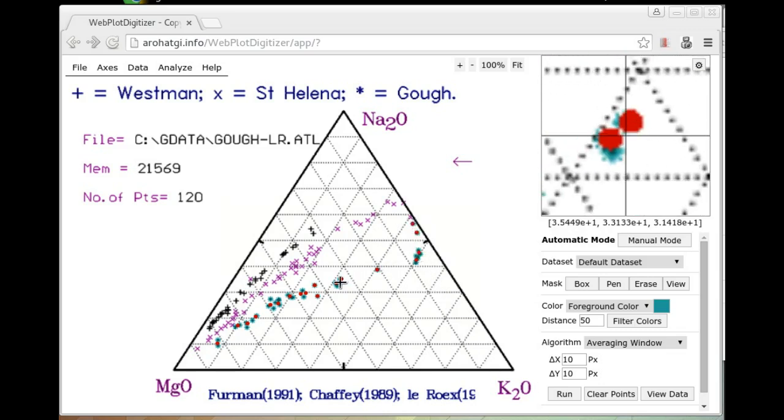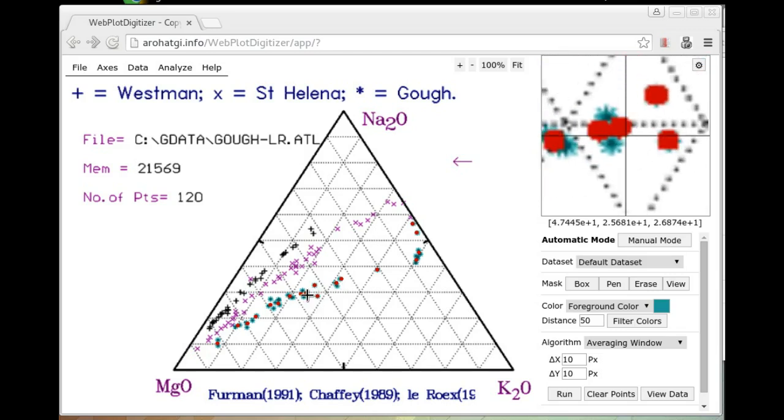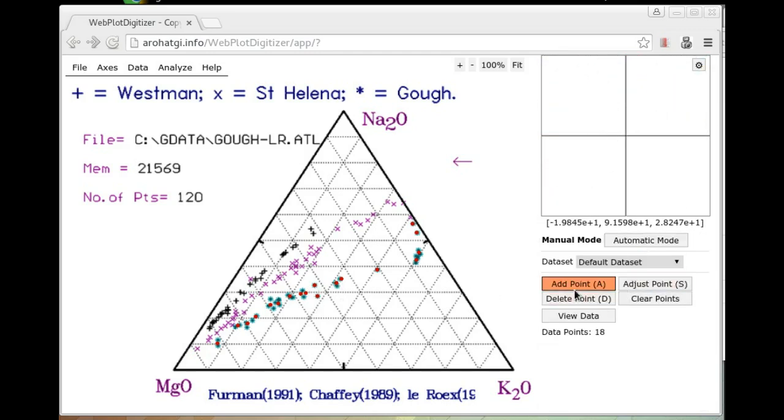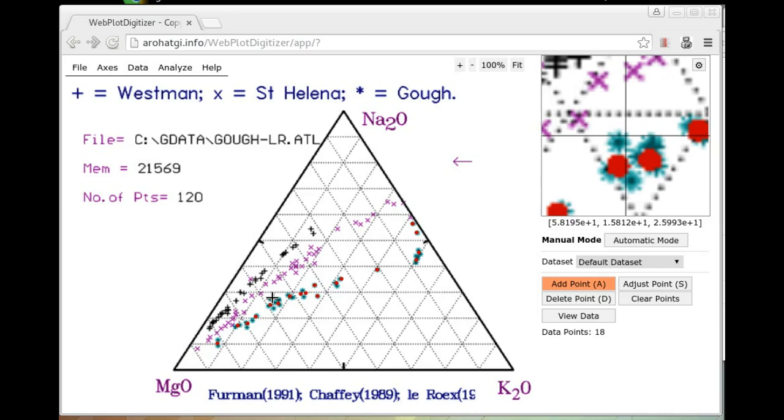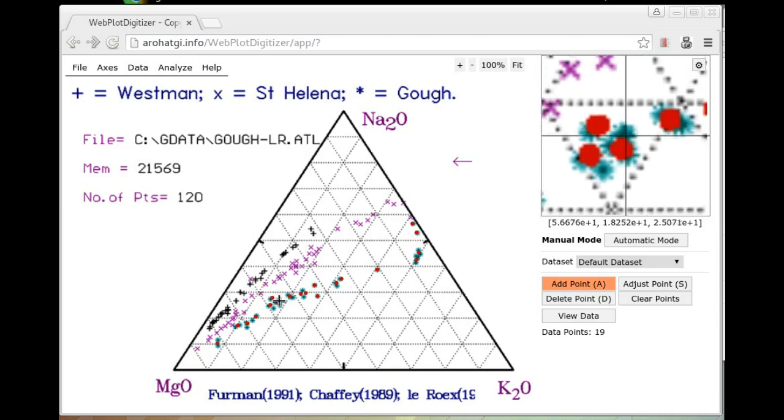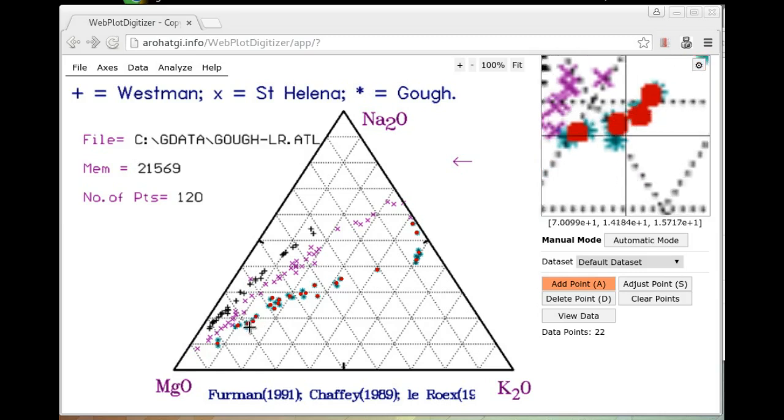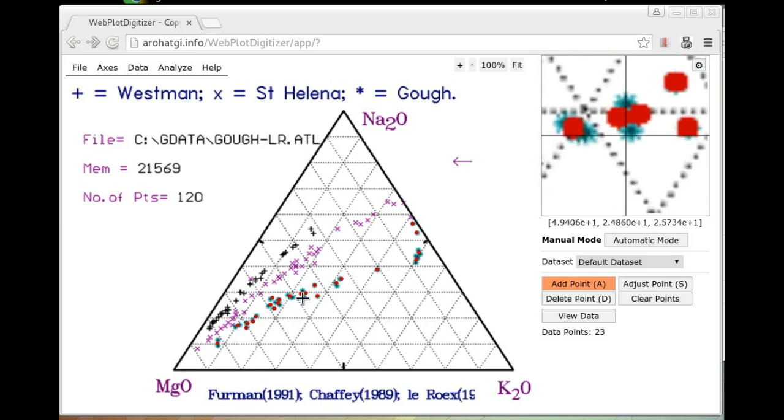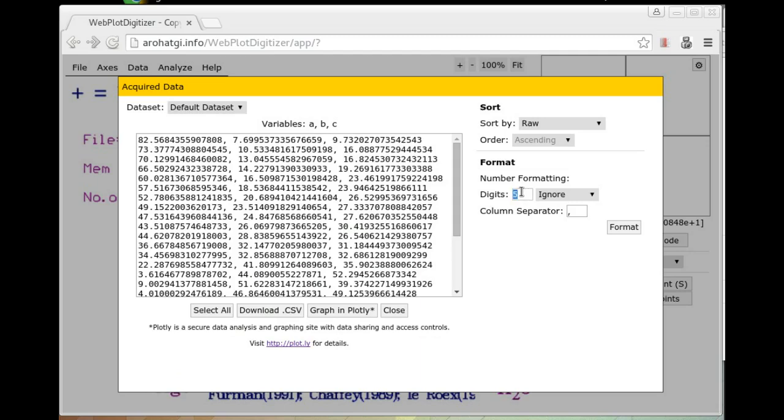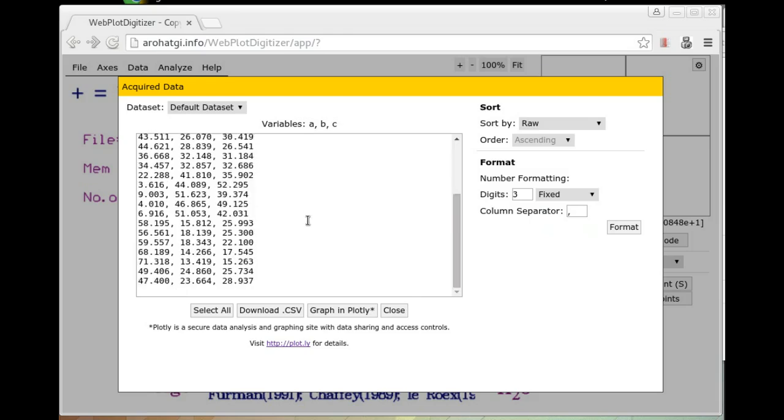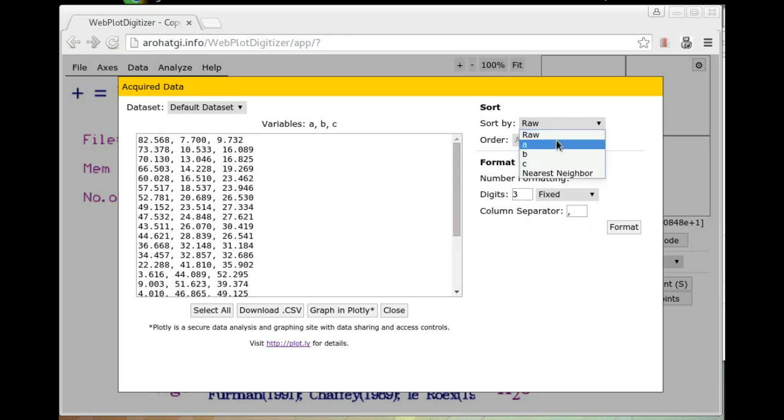Now, most of the points look correct. But in some cases, you might want to do a little manual work and add some points. And so on. Once you're satisfied, click view data. Now, you should have three columns of data. You can again format the values as you desire. And you can also sort them by the three components, A, B, C. And that's it.